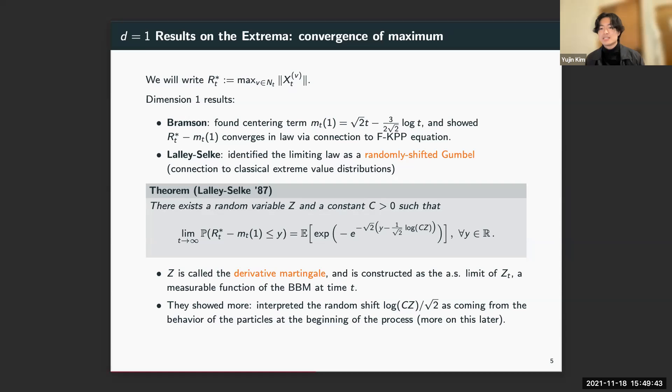This random variable is itself an important limiting object; it's called the derivative martingale. It's constructed as the almost sure limit of some functional of the branching Brownian motion at time t, so I'll just call it here Z_t. In fact, Lalley and Selke's construction of Z shows that this random shift is coming from whatever behavior is observed in the initial particles.